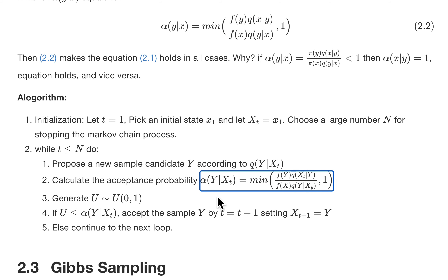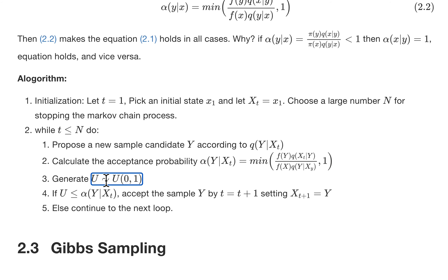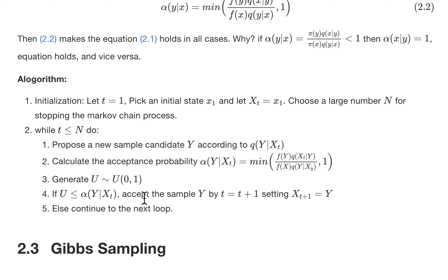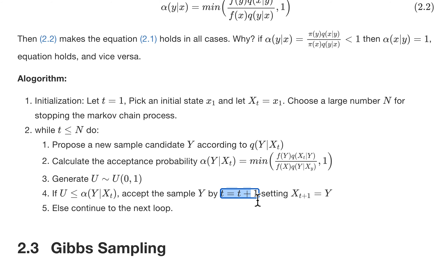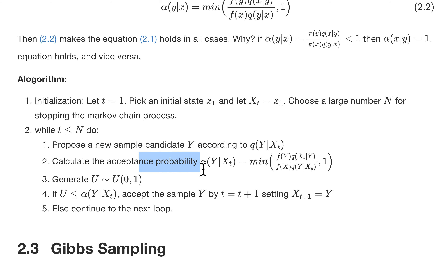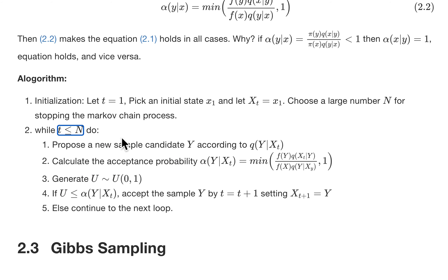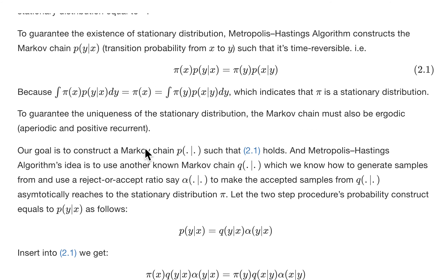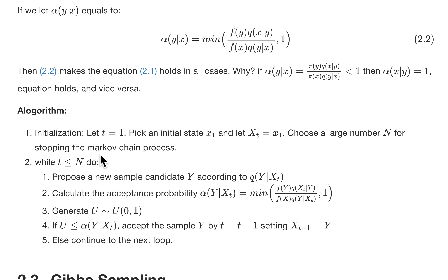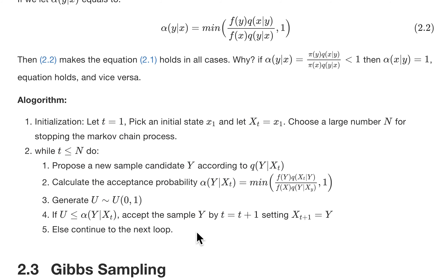Then we calculate the acceptance probability alpha(Y|X_t) using the formula we derived. Next, we generate a uniform random variable U, and if U is less than or equal to alpha, we accept sample Y by incrementing T and setting X_T equal to Y. Otherwise we don't advance — we don't move to the next sample. We continue proposing and either accepting or rejecting until we generate the N-th sample. That last sample is used as our sample for the underlying distribution X. We repeat this entire process for as many samples as we want to generate.